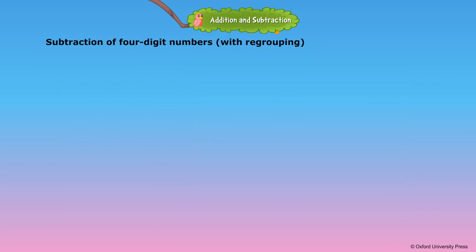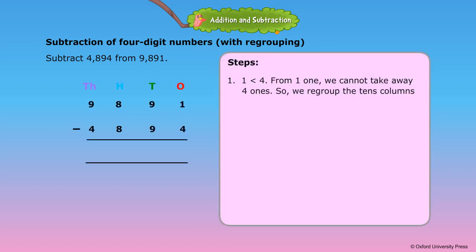Subtraction of 4-digit numbers with regrouping. Subtract 4,894 from 9,891. Step 1: 1 is less than 4. From 1 one, we cannot take away 4 ones, so we regroup the tens column. It will then be 11 ones minus 4 ones is equal to 7 ones.